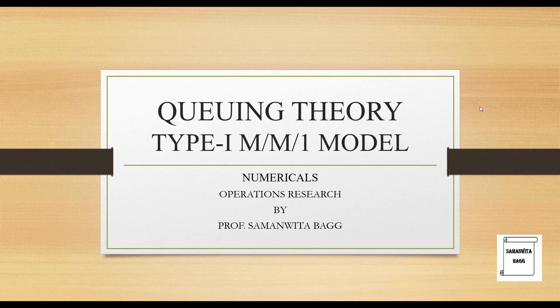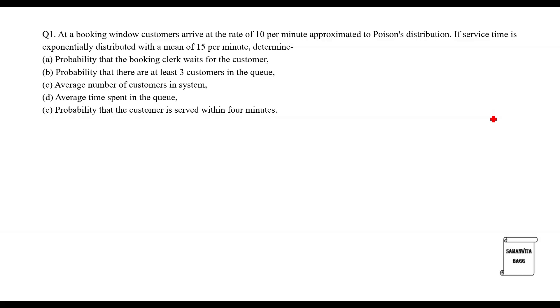Hello everyone, welcome to the next session on operations research. In this session we will take up a numerical on the topic of queuing theory. We are solving a Type 1 numerical, that is the MM1 model. At a booking window, customers arrive at the rate of 10 per minute, approximated to Poisson's distribution. The service time is exponentially distributed with a mean of 15 per minute.